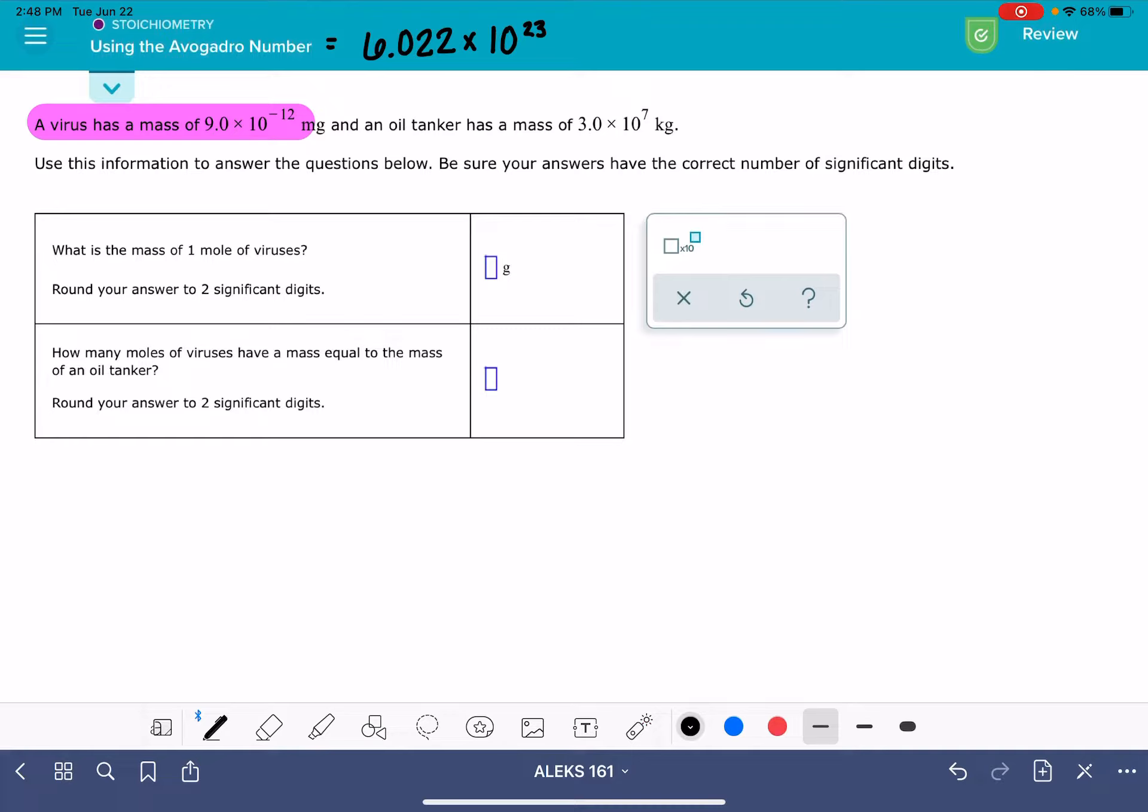So this is the way that we're going to approach this problem. We're going to start by writing out the quantity one mole of viruses. And what we want to do is figure out how many individual viruses are in a mole. So we want to get rid of that mole unit. We want to cancel out the units of moles of viruses.